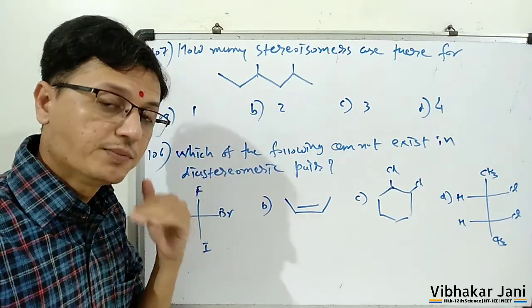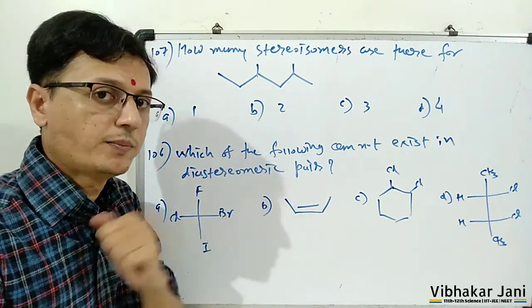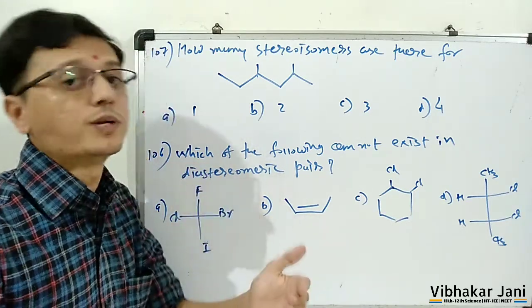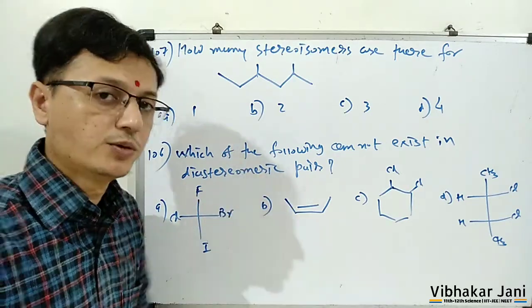In a molecule which has stereocenters, we will find out the number of stereocenters, then we will find out the total number of stereoisomers.